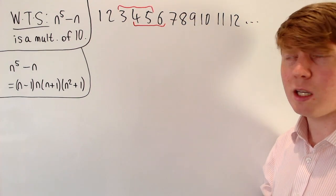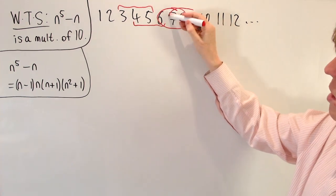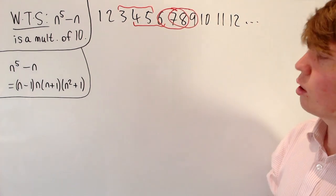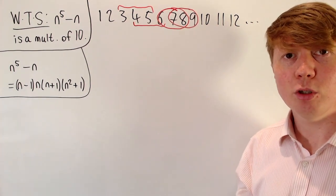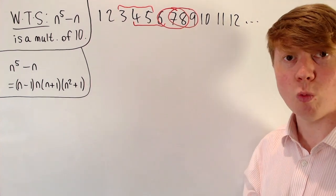But you can also see there are potentially some problems. So you could have 6, 7, 8, or maybe 7, 8, 9, where none of these three integers are a multiple of 5. And the proof doesn't seem to work. However, we have still got this n squared plus 1 term.